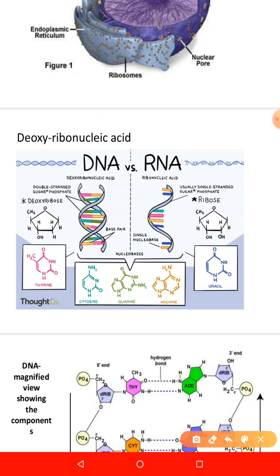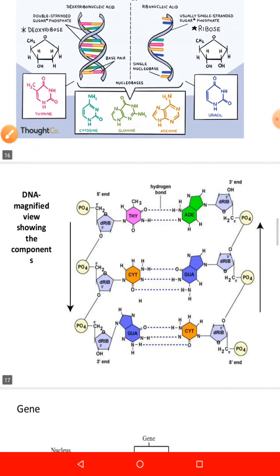DNA is a double-stranded structure. Each chain of DNA molecules contains many nucleotides. It has a deoxyribose sugar, a phosphate group, and one of the following organic bases: adenine, guanine, thymine, or cytosine.